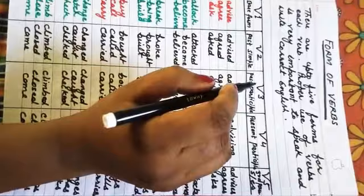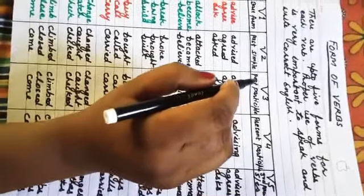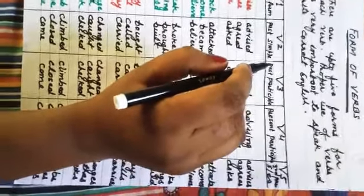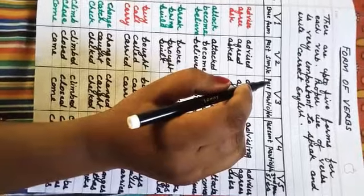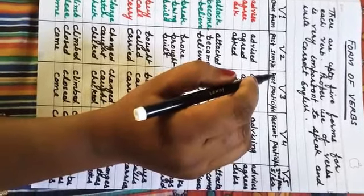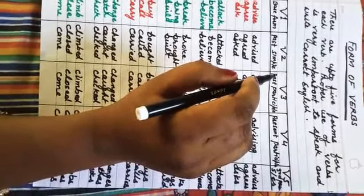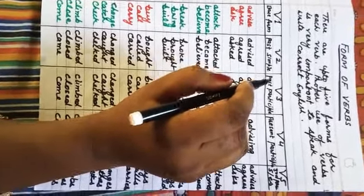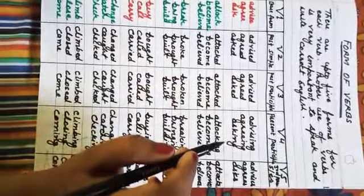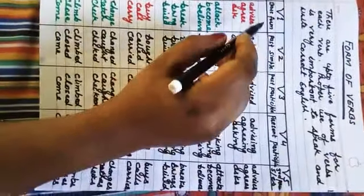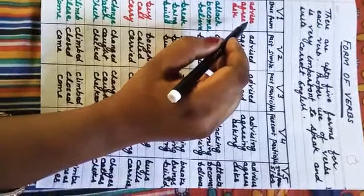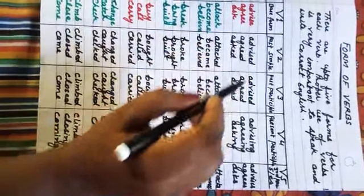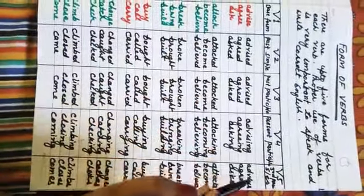There are more than a thousand verbs but I am telling you some of them which are mostly used. I am going to tell you the Hindi meaning of the base form and you have to note it down in the copy. When you create a chart, you will have to note down all the forms.